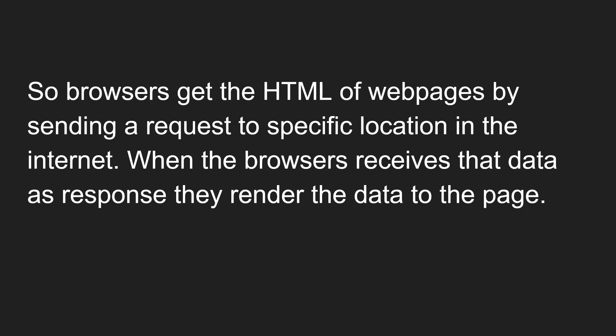Browsers get the HTML of web pages by sending a request to a specific location on the internet. We need to know the location — the specific location — to which we are sending the request. When the browser receives the data as a response, it renders that data to the page.